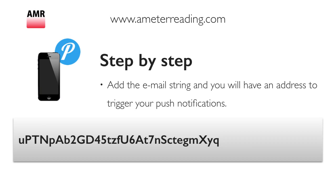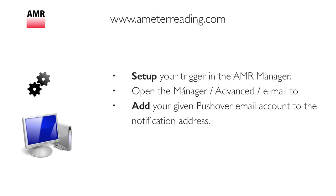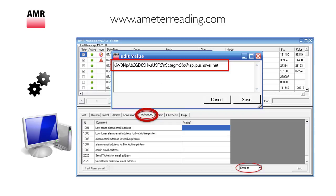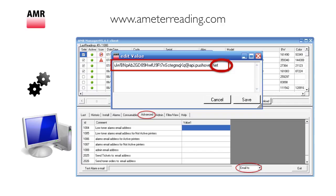If you add the email string at the back, you have a specific email address where you can send push notifications. Go to the setup on the manager, click on the advanced tab, make sure you see the email in the button window, and then type in the email address in the cell.